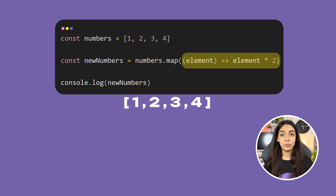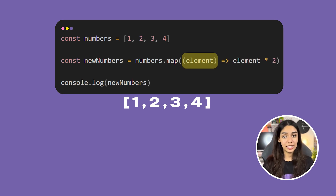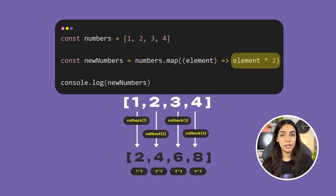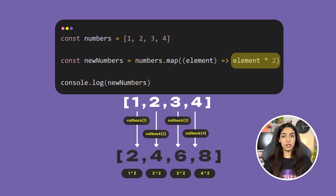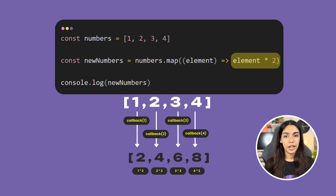Let's consider another example where you want to double every value in the array. The callback function receives an element, and at that position in the returned array you want the value to be doubled. So from the callback you return element * 2. Now in the new array all of the elements are doubled.